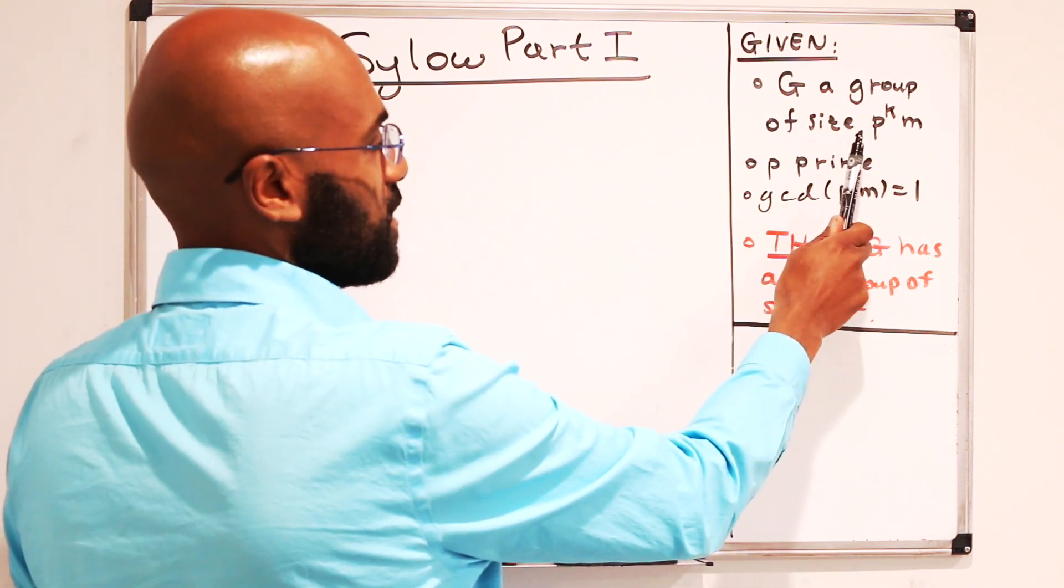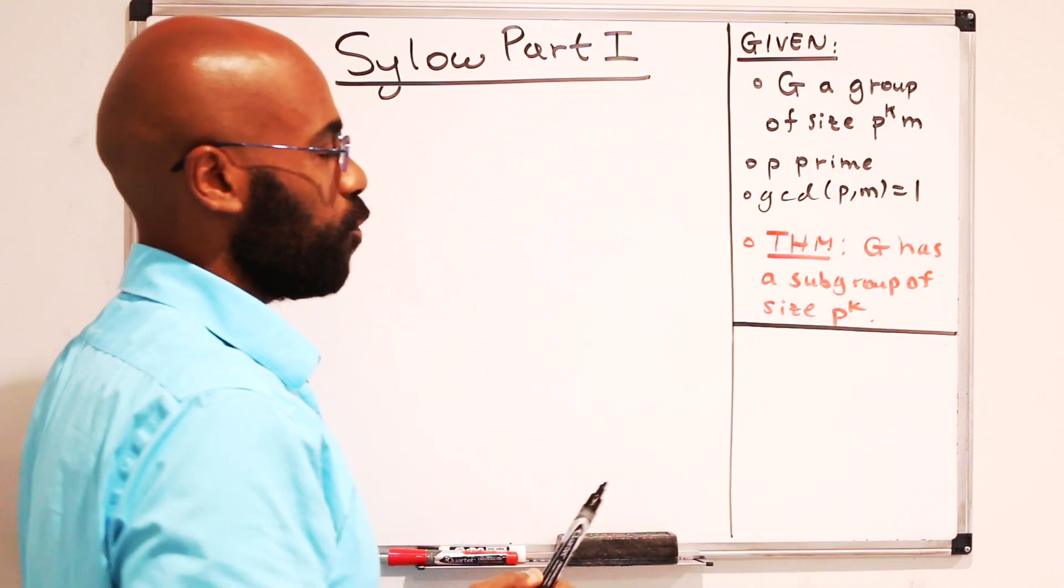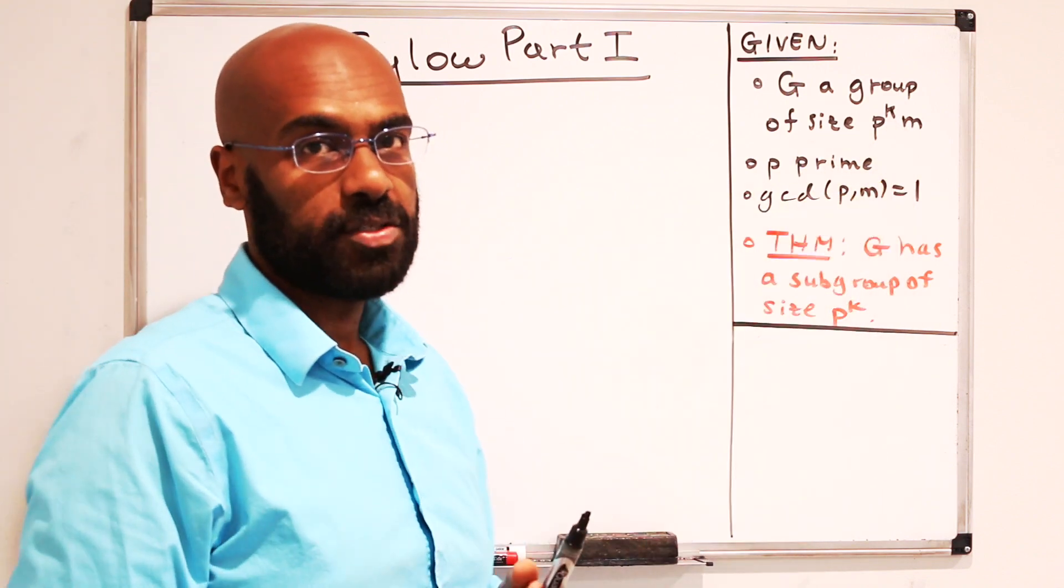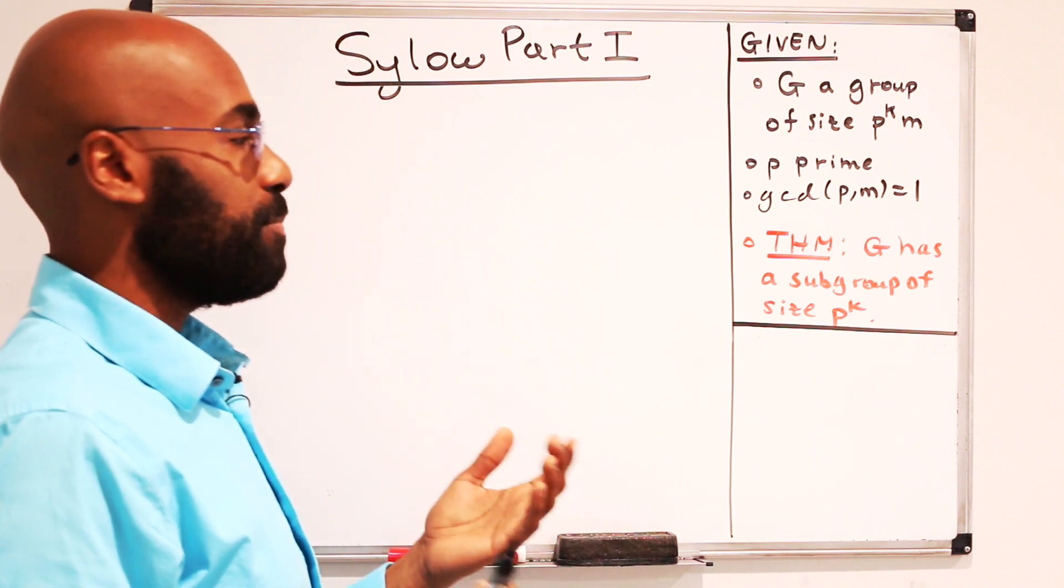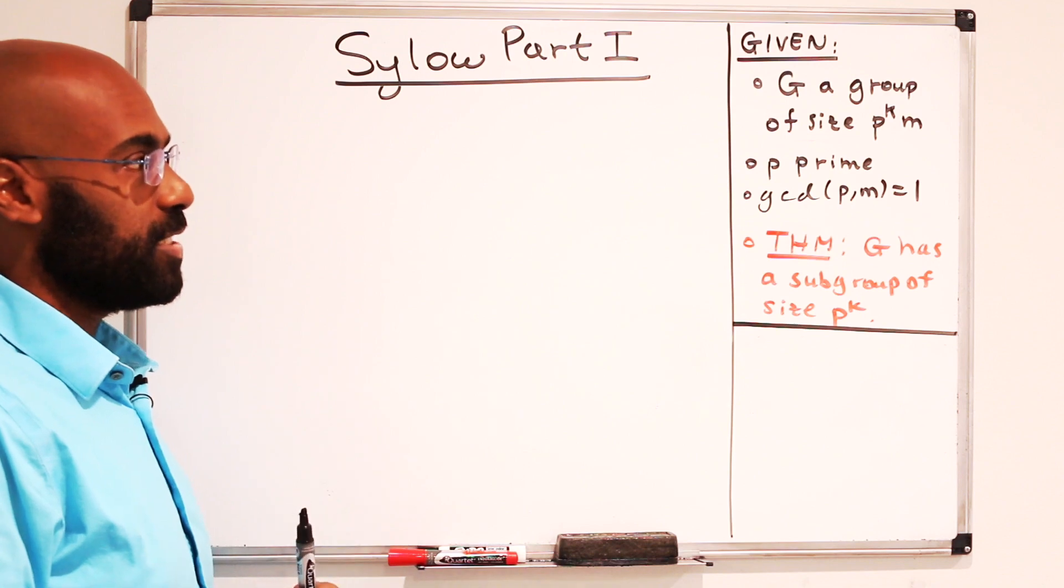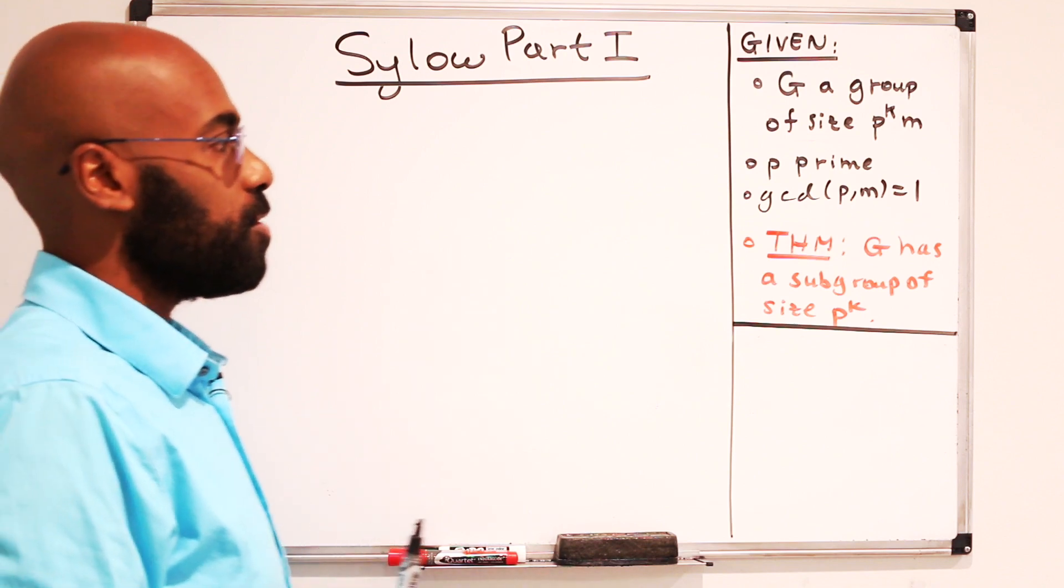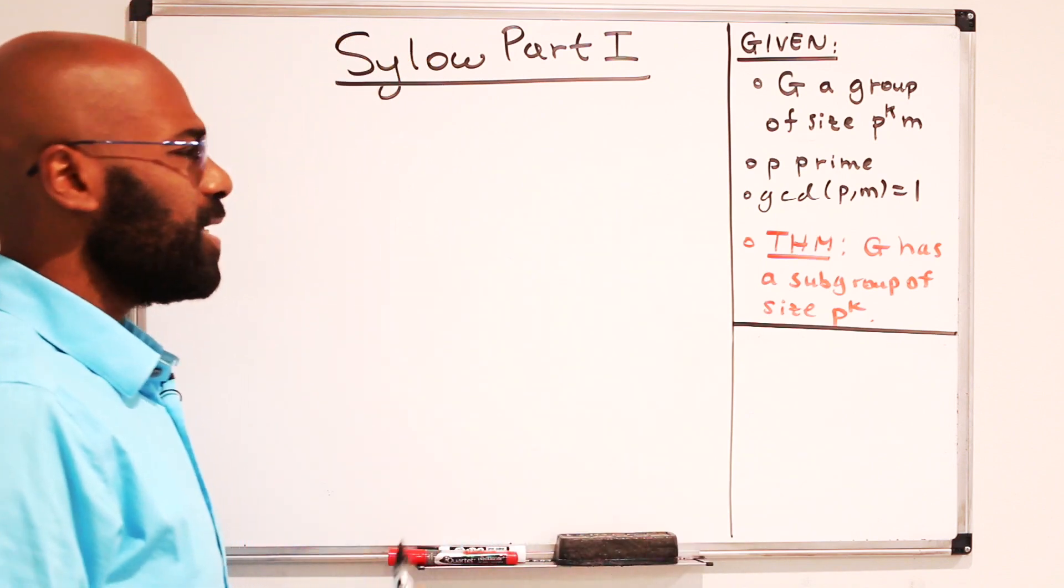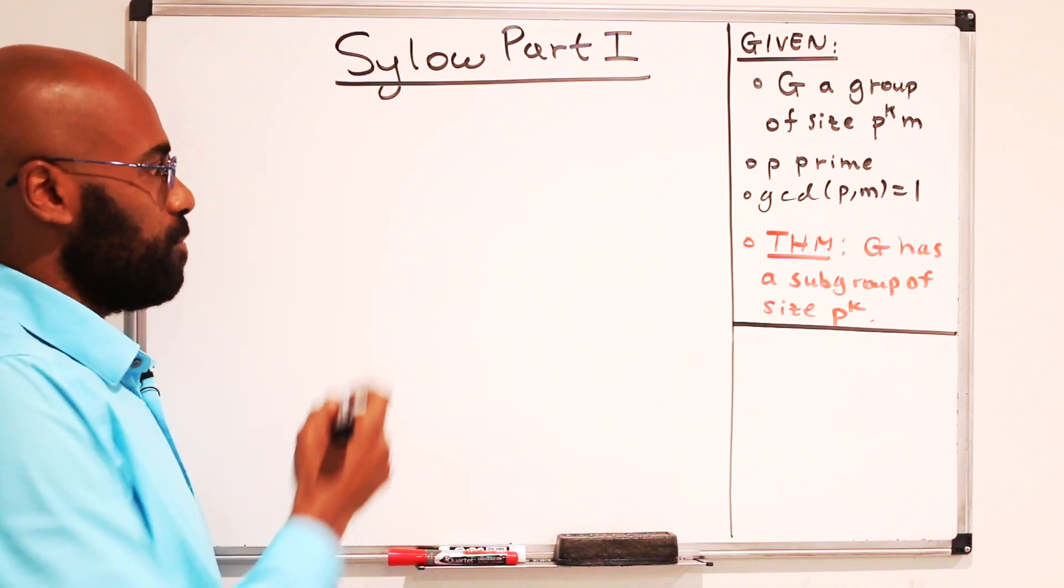So you're given a group G that has size p to the k times m, where p is a prime, and p and m have no common factors. So another way to word this is that p to the k is the highest power of the prime p that divides the size of G. And the theorem is that G is forced to have a subgroup of this size p to the k.